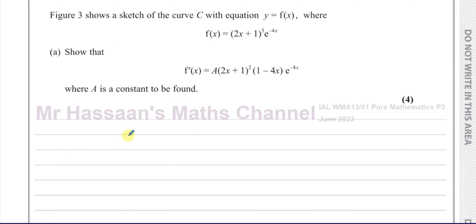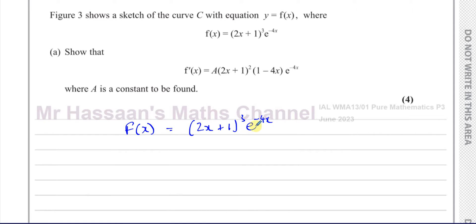So f of x is equal to 2x plus 1 to the power of 3 times e to the power of minus 4x. Here we have a situation where you have a function inside a function, but then multiplied by another function inside a function. So you have basically two separate products which are not related to each other — it's not like one function is inside the other. Therefore we have to use what's called the product rule.